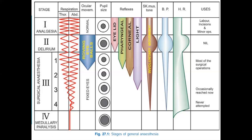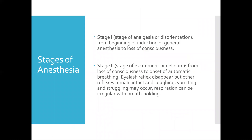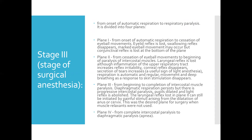In summary: Stage 1 is analgesia or disorientation — from beginning of injection to loss of consciousness. Stage 2 is excitement or delirium — from loss of consciousness to onset of automatic breathing; eyelash reflex disappears, other reflexes remain, coughing, vomiting and struggling may occur, respiration is irregular. Stage 3 is surgical anesthesia — from onset of automatic respiration to respiratory paralysis, divided into four planes. Plane 1: onset of automatic respiration to cessation of eyeball movements; eyelid reflex lost, swallowing reflex disappears, marked eyeball movements may occur, conjunctival reflex lost at bottom of plane.